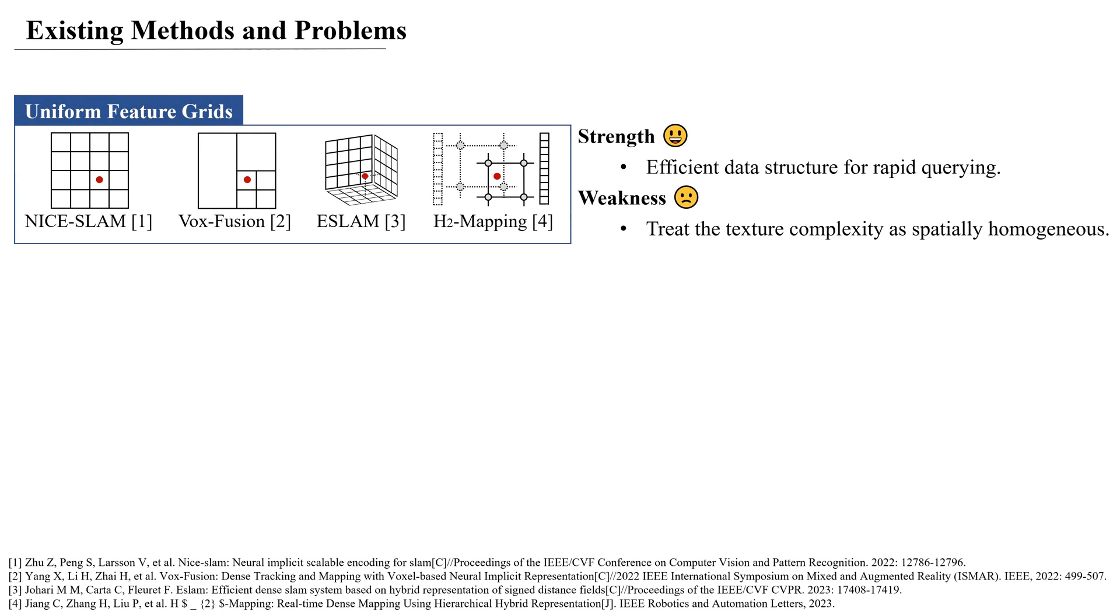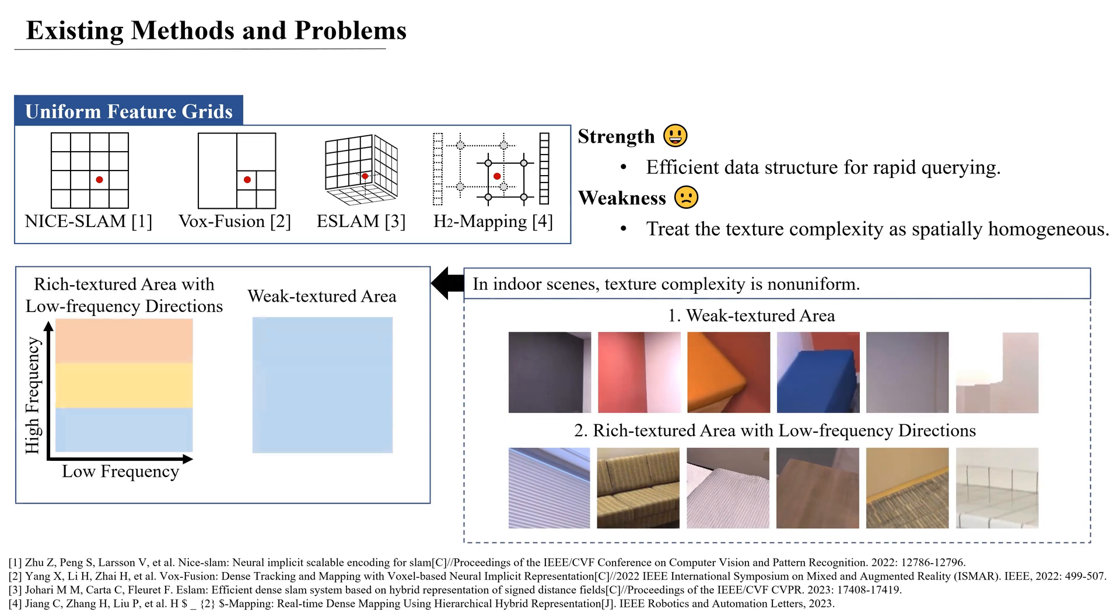Uniform feature grids, commonly used in NeRF-based mapping for their fast querying capabilities, treat texture complexity in a spatially homogeneous manner. However, in indoor scenes, texture complexity is non-uniform.